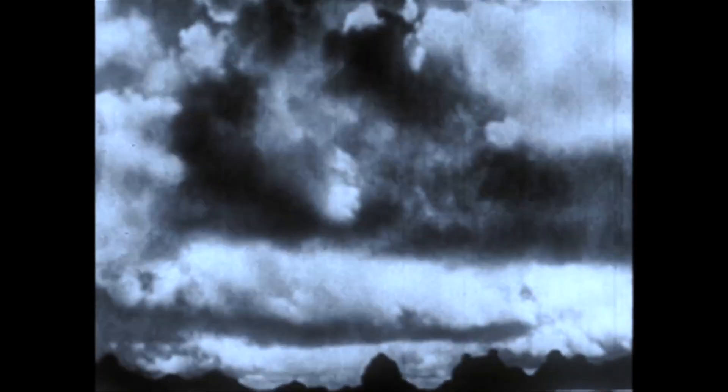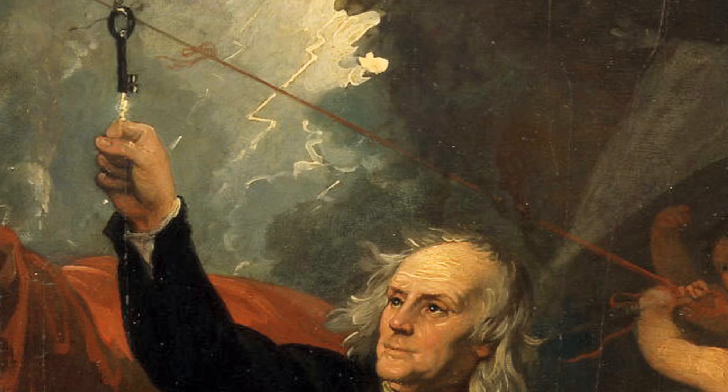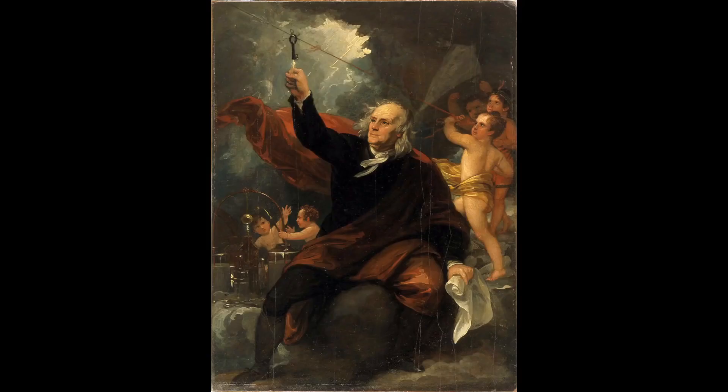In the famously dangerous experiment done alone with his son, he led a kite into a thunderstorm. And near the bottom, where the thread was wet, he tied an iron key. And after some time, he brought his knuckle up to the key and experienced a series of small shocks, identical to the ones created by contact with fur. This showed that indeed, lightning was simply the same thing as these household shocks, but on a massive scale.